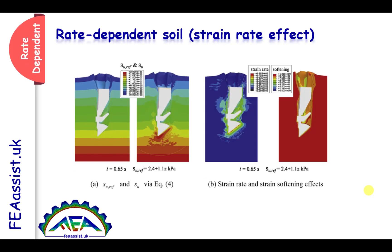Rate-dependent behavior: as you can see in the results of our package, you can see the shear stress, the reference shear stress, and the current shear stress in the soil. So we can see the effects of shear stress. In this image, we can see the effects of strain rate. Rate or time can affect the behavior of the soil, and we can study this strain rate effect. Also, applying strain can make the soil softer, and we can look at the softening effect of the strain.